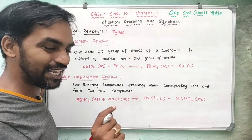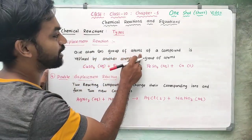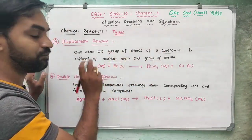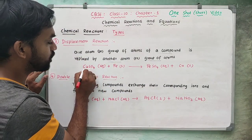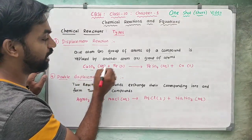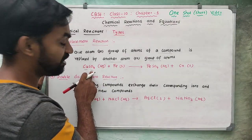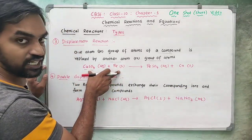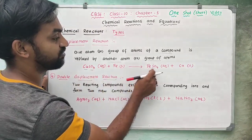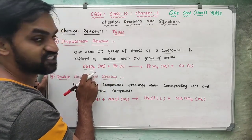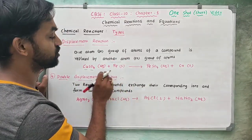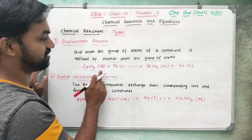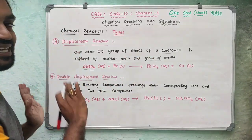Displacement reaction: one atom or group of atoms of a compound is replaced by another atom or group of atoms. For example, iron combined with copper sulfate — iron displaces copper, so copper sulfate becomes ferrous sulfate and copper is deposited as a metal. The sulfate group is transferred from copper to iron. This is a displacement reaction.